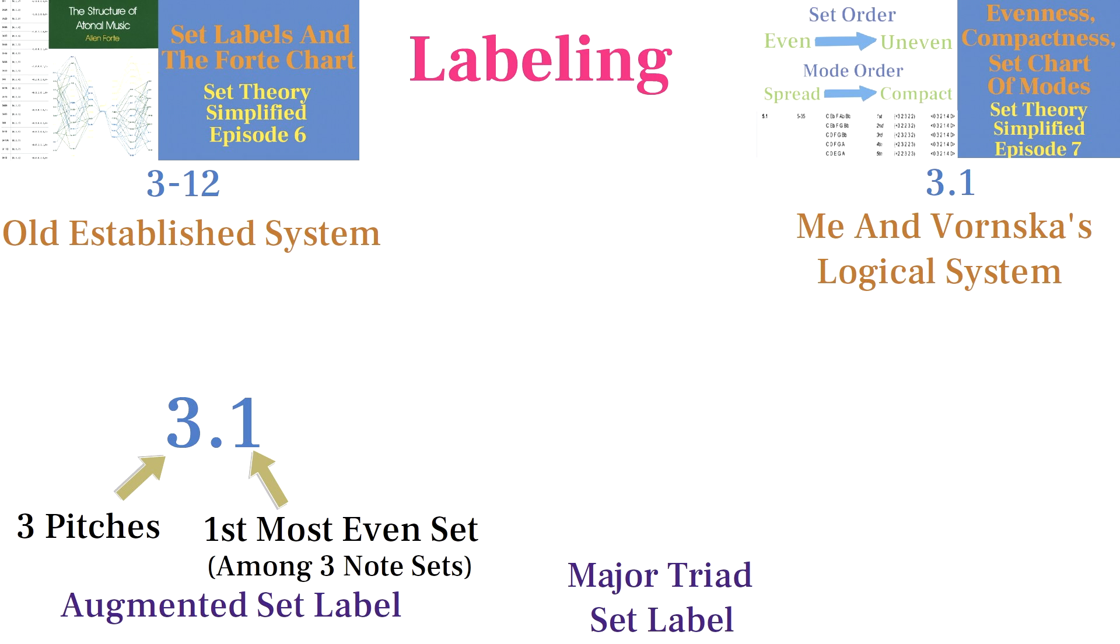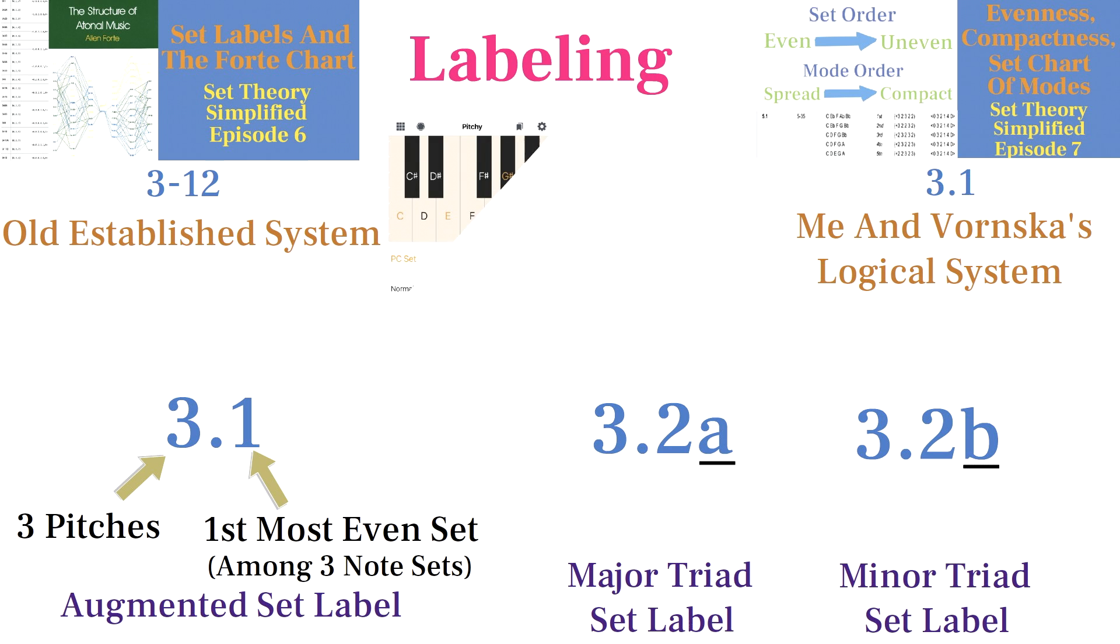Sets that are inversion pairs are labeled as the same number because they are the same shape, but are distinguished between each other with either an A or a B. Giving sets labels allows us to identify any set of pitches using a set calculator.